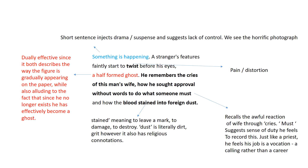'Twist' has connotations of pain and distortion — we feel real sympathy both for the photographer and for the victims of war. 'A half-formed ghost' has two meanings: it describes the figure gradually appearing on the developing paper, those white shadows forming, but it also alludes to the fact that the man no longer exists — he has effectively become a ghost. Death is ever-present in this poem, returning through each stanza.